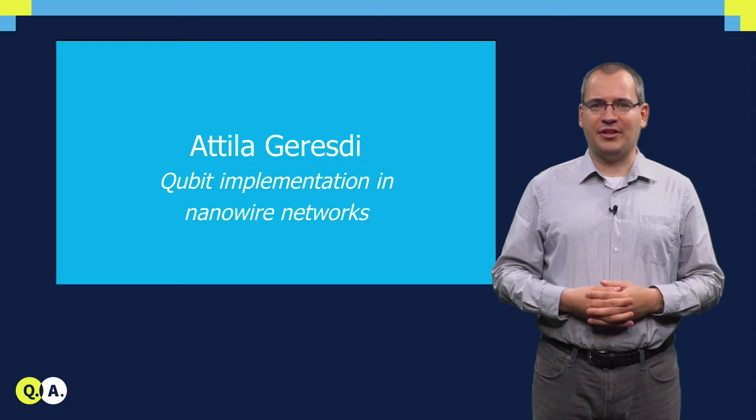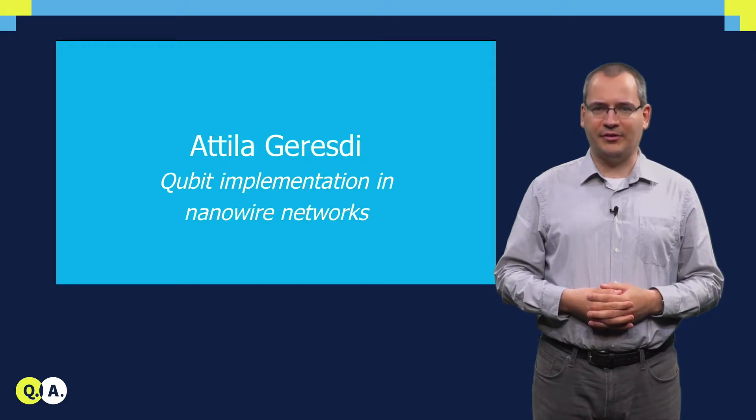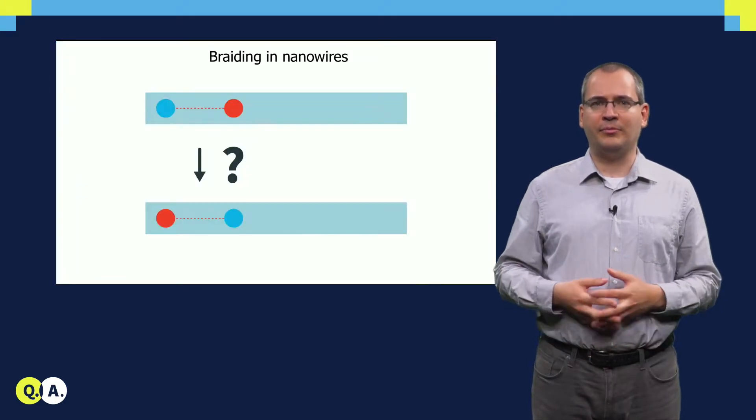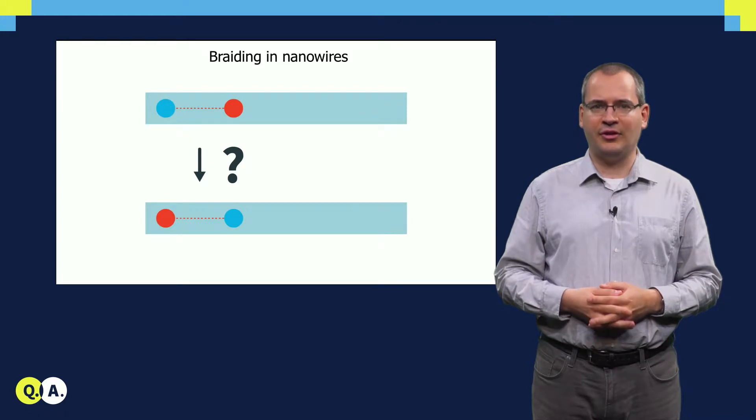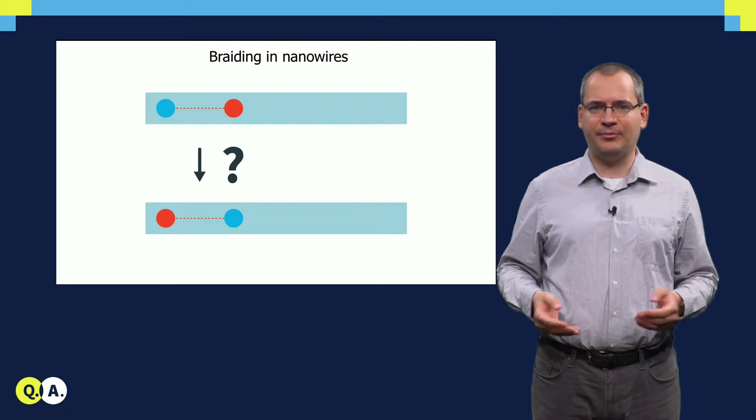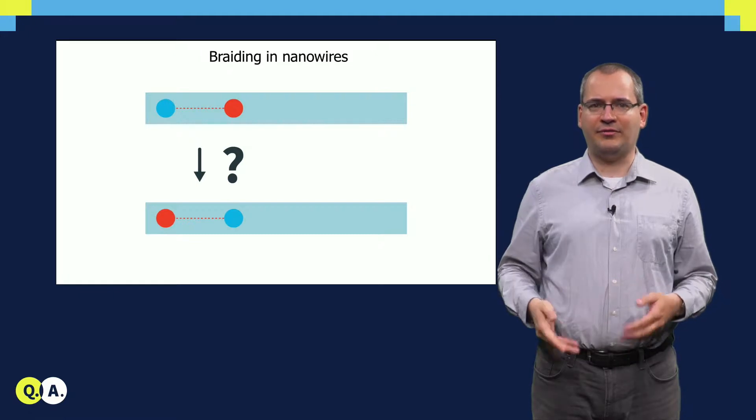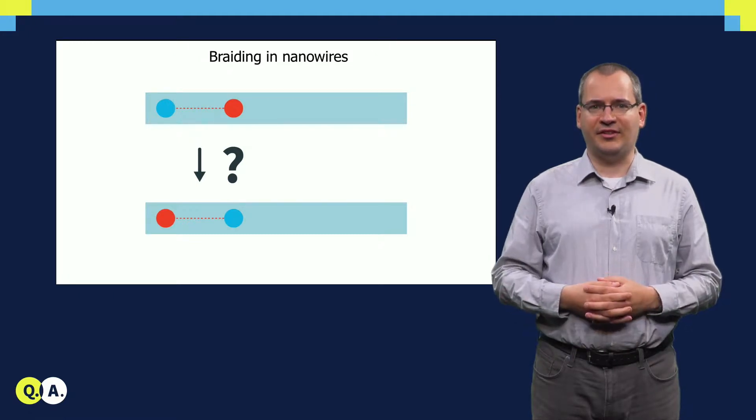Let's discuss some real-life implementations of these topological quantum bits. The most pursued platform consists of semiconductor nanowires attached to superconducting leads, where Majorana-bound states emerge, and we have the braiding statistics of the Ising anyons.